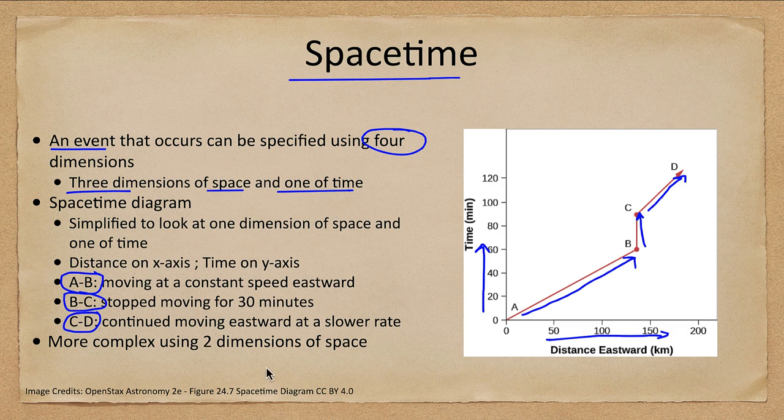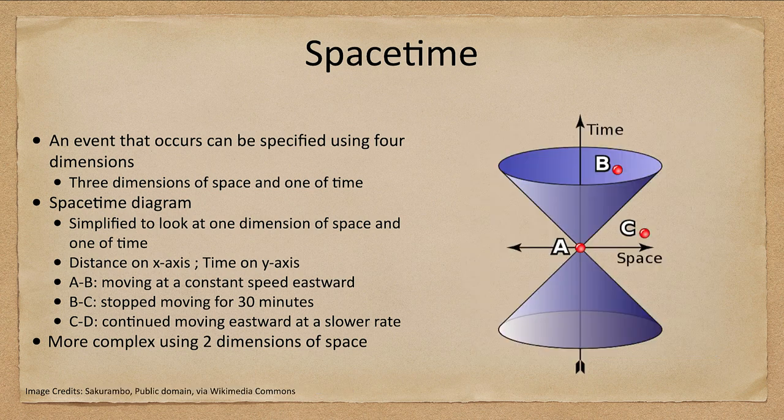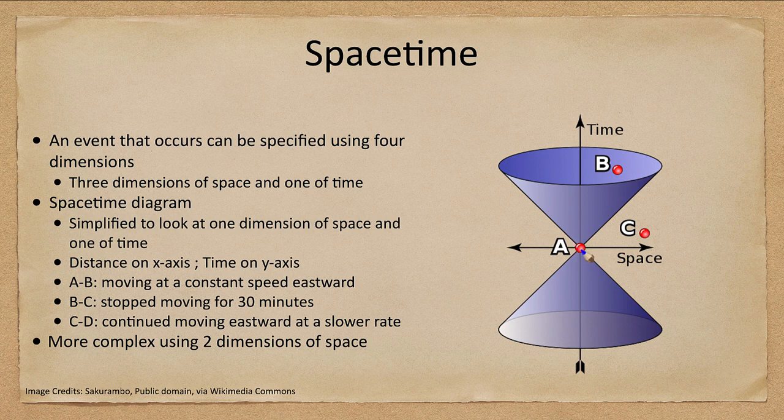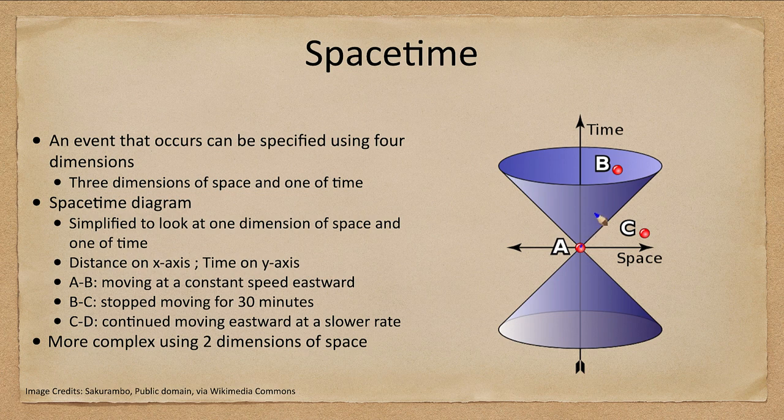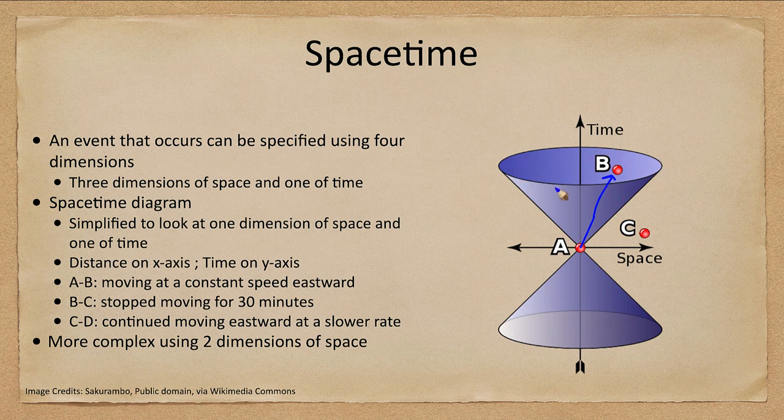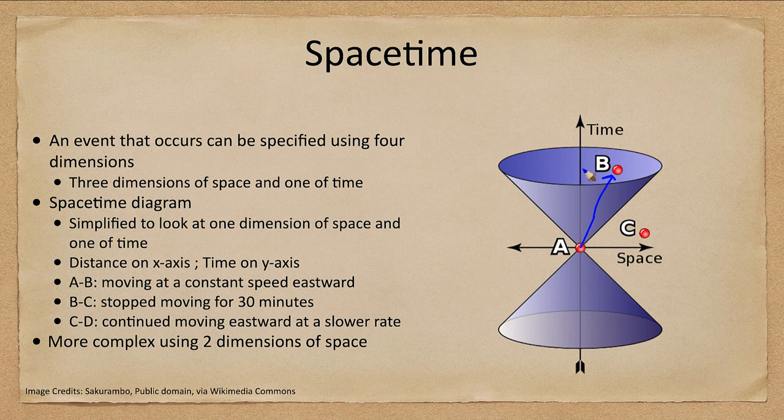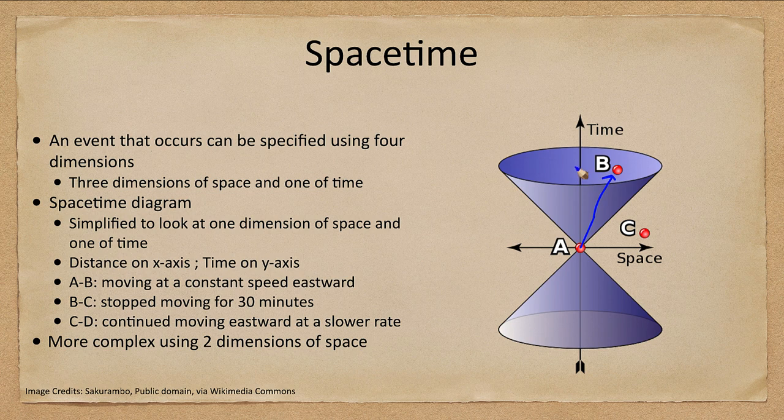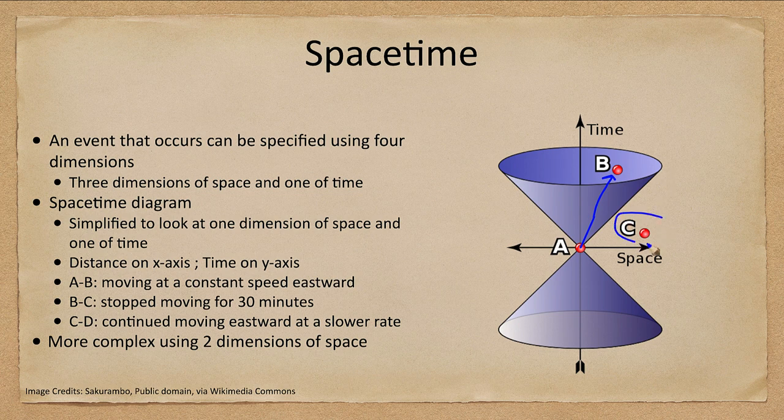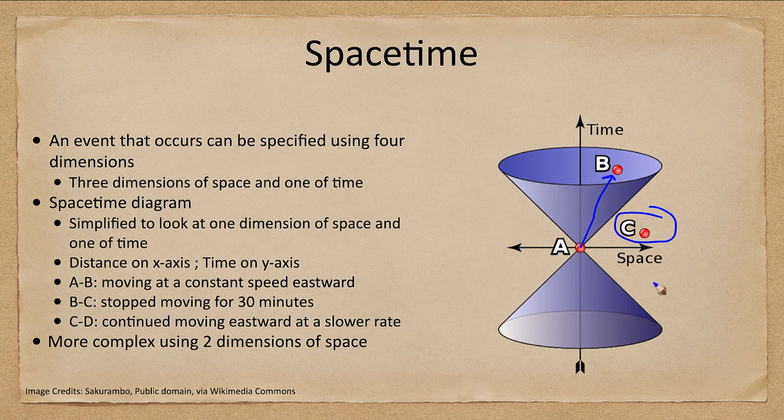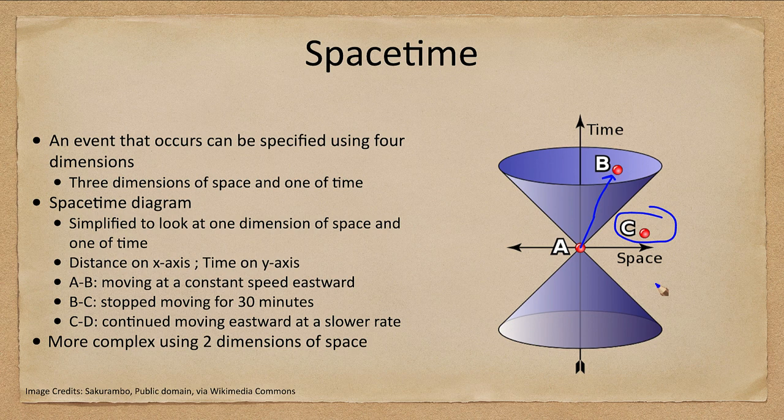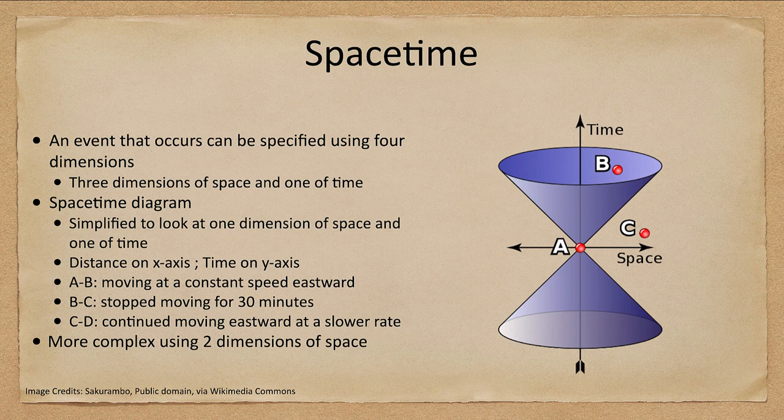Now we can also look at spacetime using a two-dimensional diagram. And here we see points like A, B, and C. So A is where you are. B is a point you can get to because you're traveling within this cone. This cone is set by the speed of light. You cannot travel outside of that cone. So if you stop moving, you keep going forward in time, and that's it. Depending on how fast you're moving, you could get closer and closer to the edge of the cone. The edge of the cone is the speed of light. So C would be inaccessible. You cannot get to point C because it would require faster than light travel.